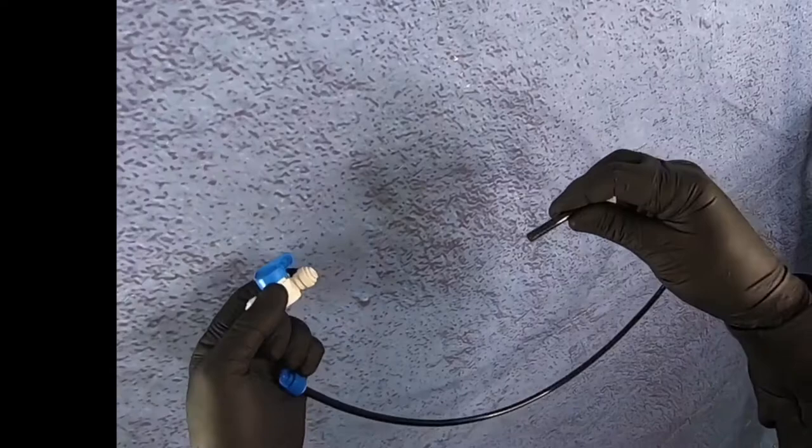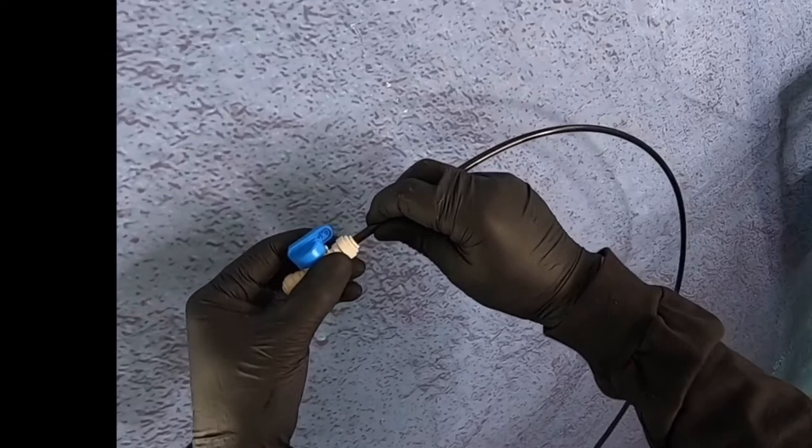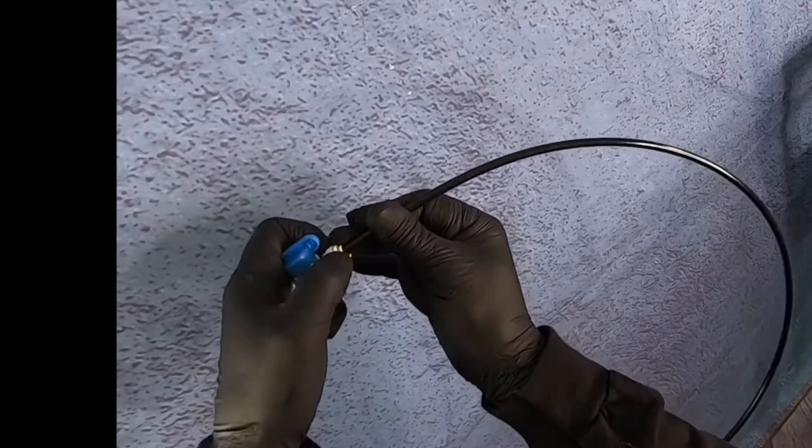And to reinsert the tubing, we're going to push it in until it seats all the way. You can feel it seat, and you can give it a little bit of a tug back. And then again, if you're using a locking clip, you can just push the locking clip in between there and you're done.